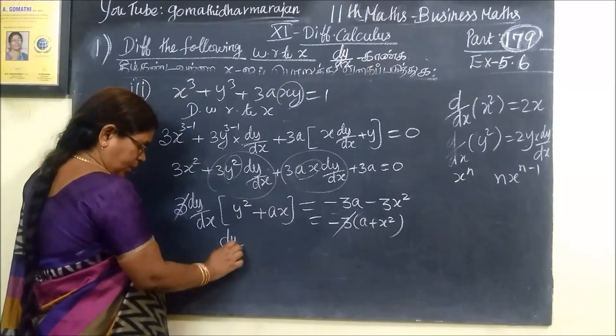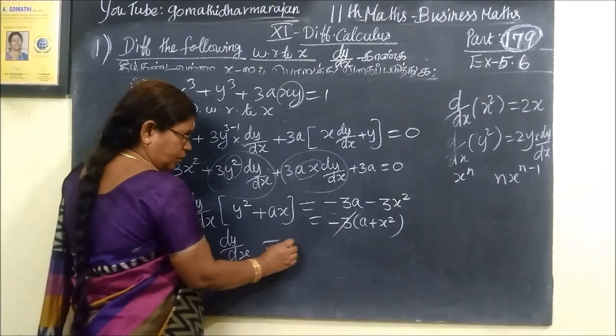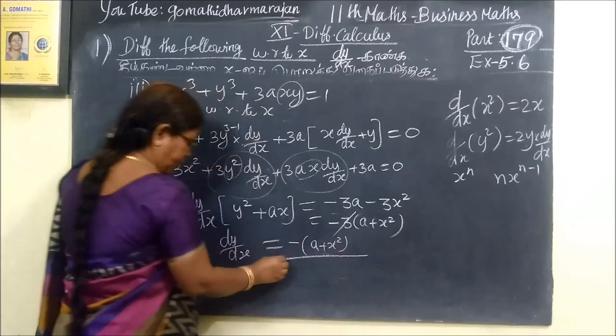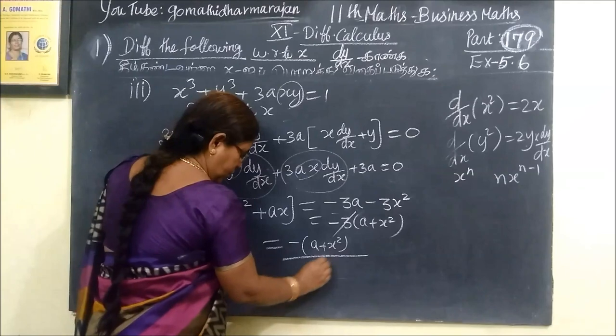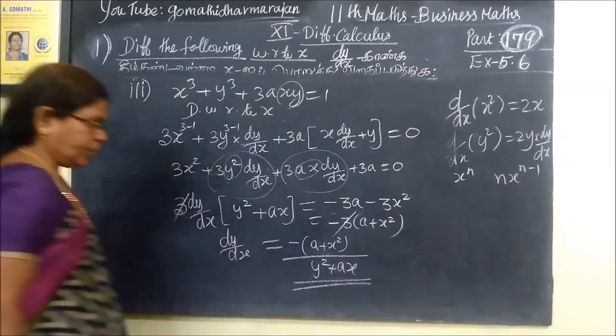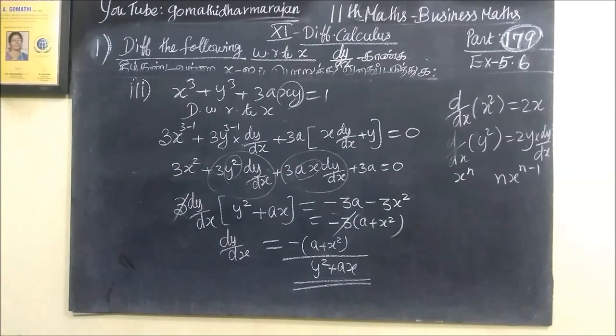dy/dx equal to minus x squared plus ay by y squared plus ax. This is the answer.